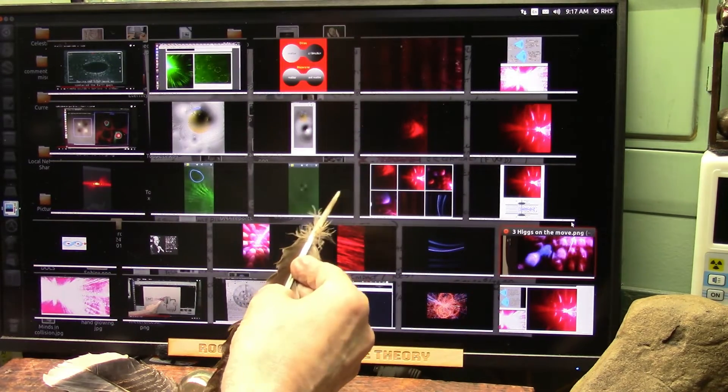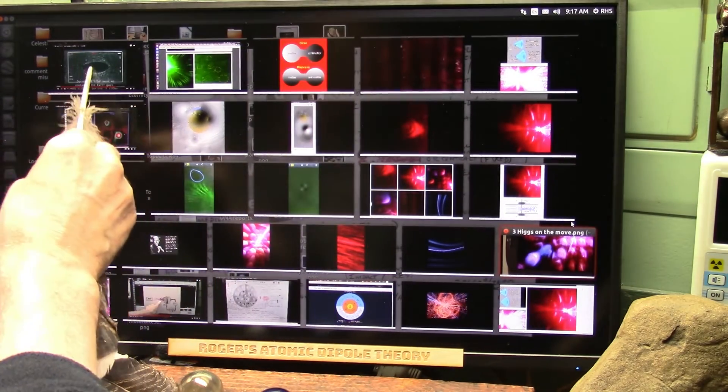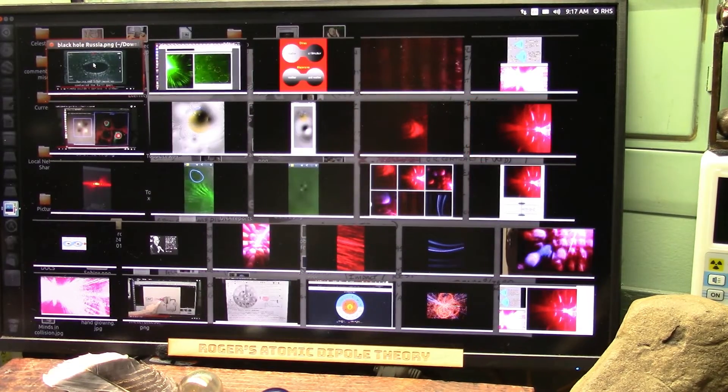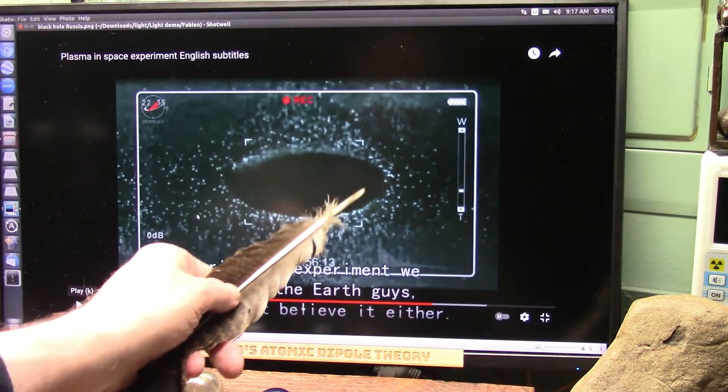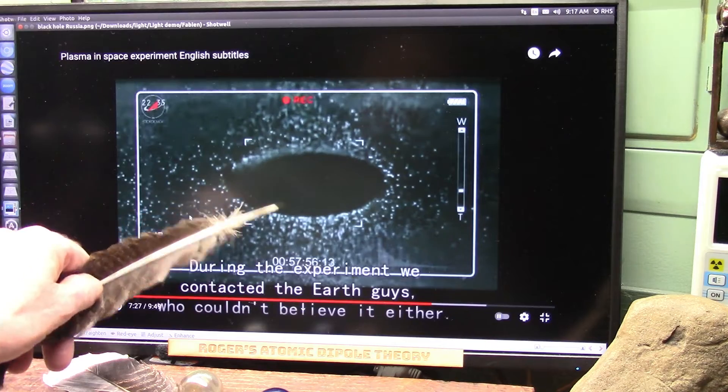Now, this is what I showed Don Lincoln from the Russians. This goes back to, I think, 2015. And I said, Don, they found the dark particles separated from the white particles in space. They freaked out. They said they contacted the Earth guys. They couldn't believe it either. They just absolutely freaked out.